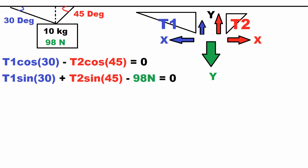Being that this is a statics problem, everything equals zero because there's no movement. The x-forces, or cosines of the tension, equal zero because they cancel each other out as seen in the diagram. So tension 1 cosine of 30 minus tension 2 cosine of 45 equals zero.